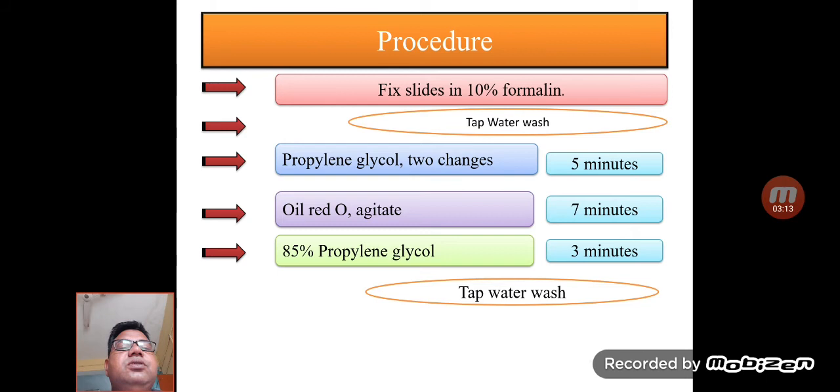Then in Oil Red O solution for seven minutes, 85% propylene glycol for three minutes. These are the timings for different solutions in which we keep the slides, and again washed with tap water.